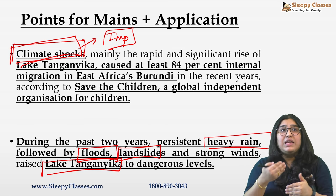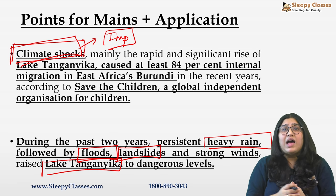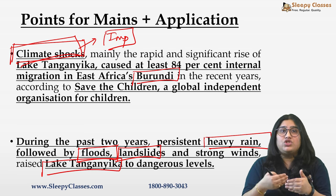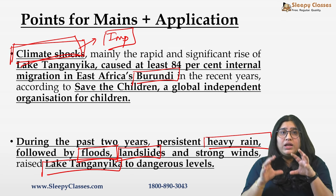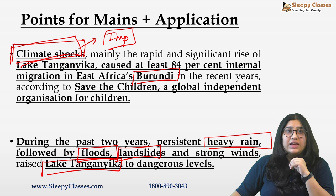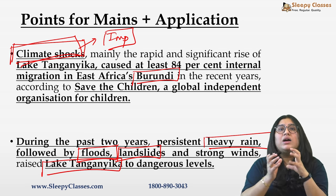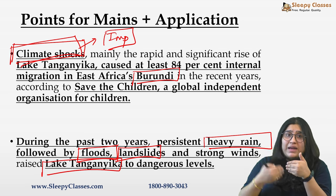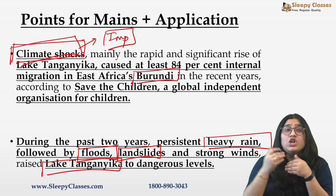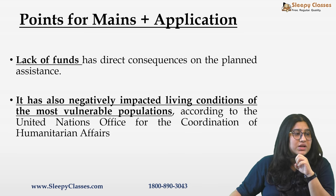आप इस example को definitely use कर सकते हैं — कि देखा गया है कि इस particular lake का level इतना rise हो गया है, इसलिए बुरुंडी में internal migration बढ़ गई है। यह particular report एक independent organization ने recently दी है। जब भी आपको climate migrants से associated कोई question आए, वहाँ पर भी आप इस example को use कर सकते हैं।